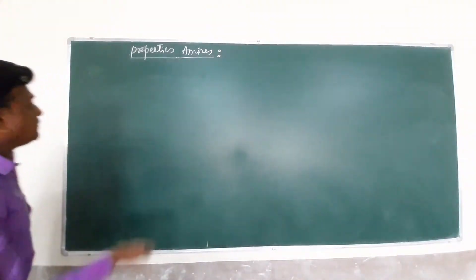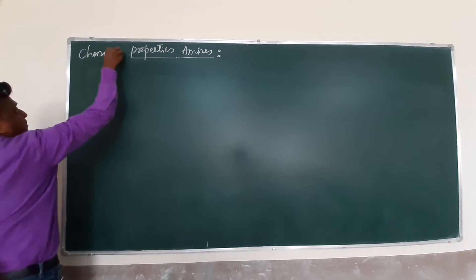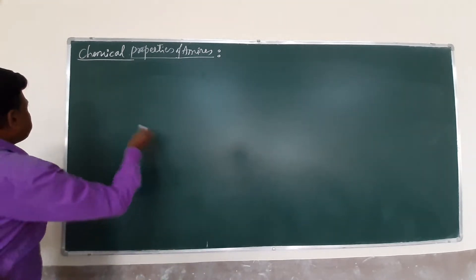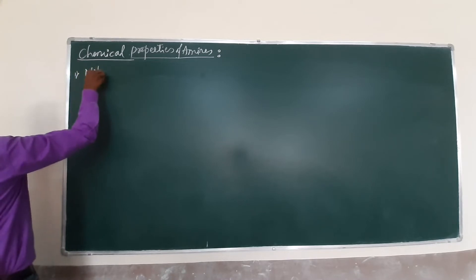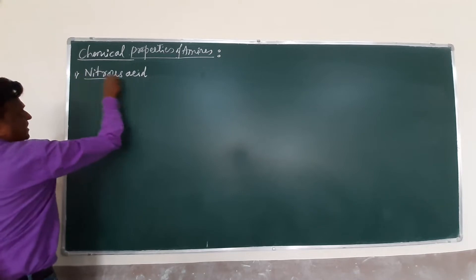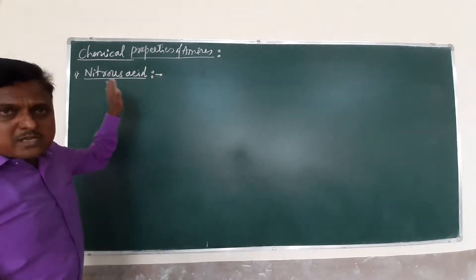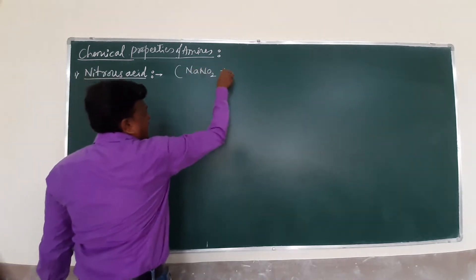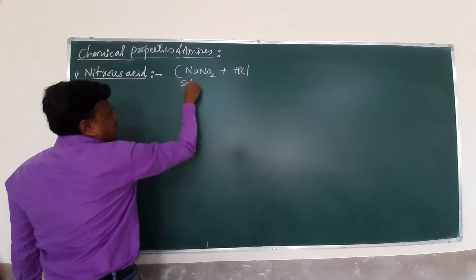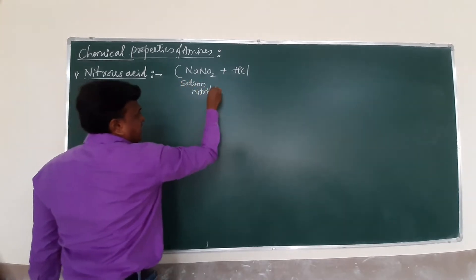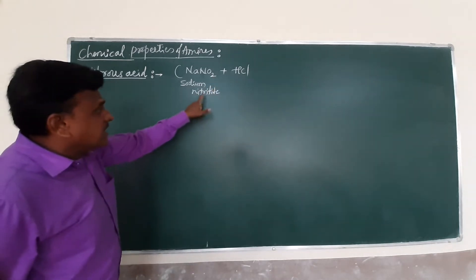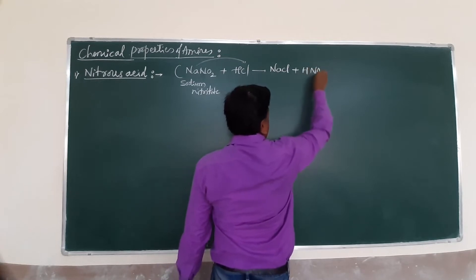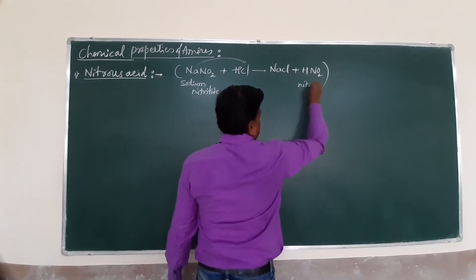The chemical properties of amines are a very important part of the syllabus. The first chemical property is the reaction with nitrous acid. Nitrous acid has the chemical composition of NaNO2 (sodium nitrite) and HCl. NaNO2 reacts with HCl to form sodium chloride and HNO2. This HNO2 is called nitrous acid.